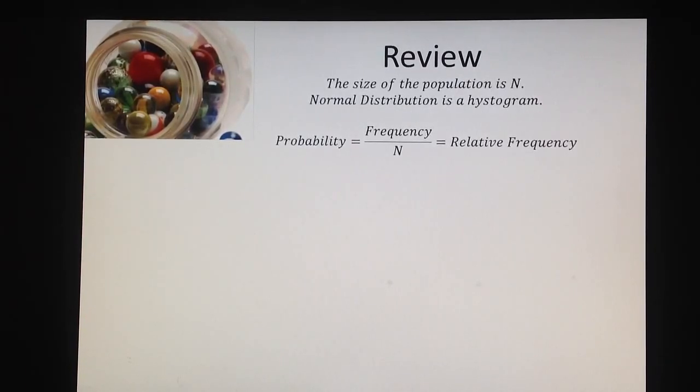If we have a population with n individuals and a certain event is occurring n1 times, or we have frequency of a certain event, if I divide this frequency by the total number of cases, I will have the probability which is oftentimes called relative frequency.